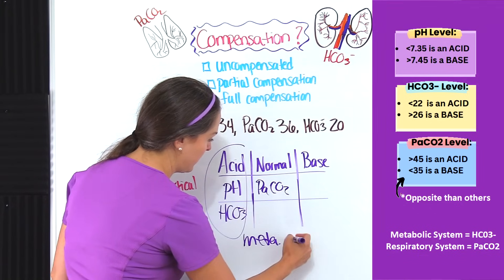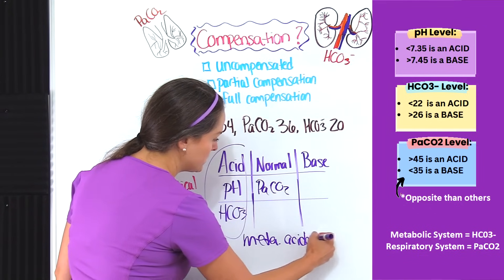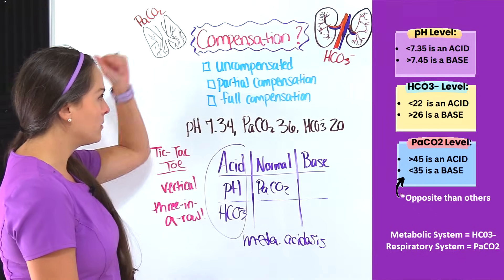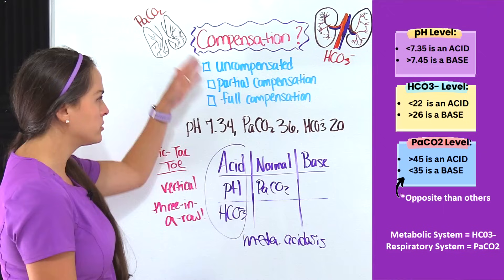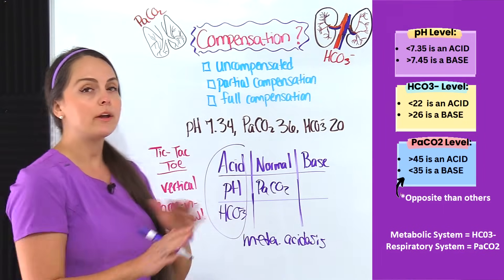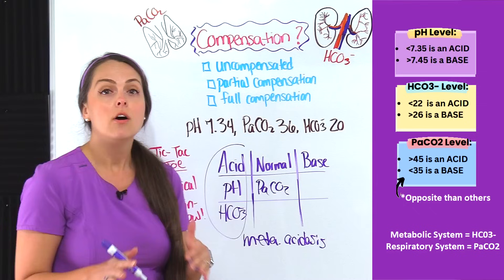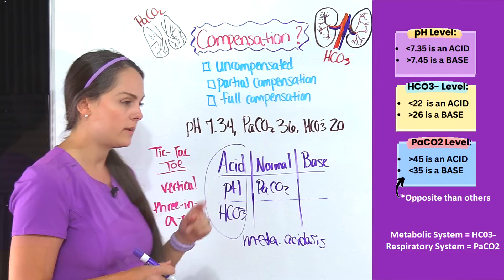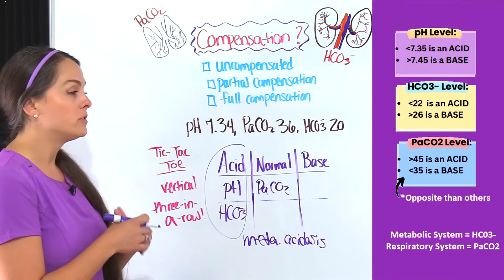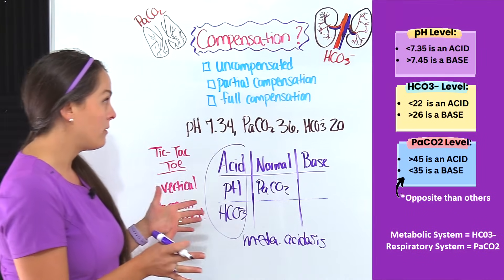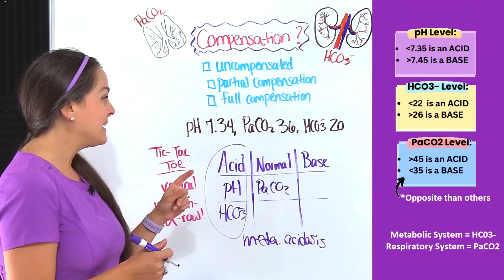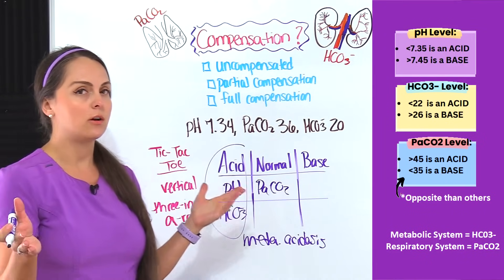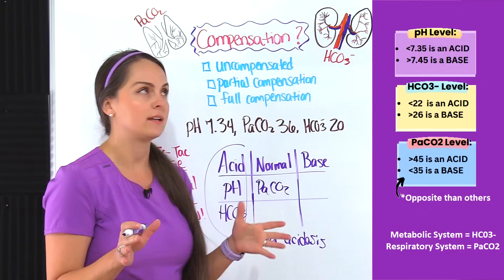Now I have to determine what kind of compensation I have: uncompensated, partial compensation, or full compensation. I can rule out full compensation for two reasons: one, I do have a vertical three in a row, so I know I don't have full compensation; and two, my pH is abnormal, so the body hasn't fully compensated.